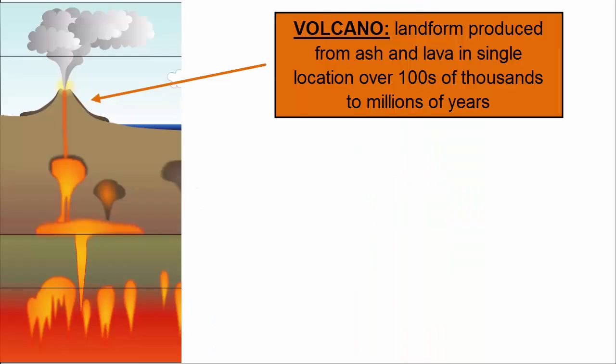A volcano is the landform created through the piling up of lava flows and ash deposits when volcanism happens in a single location over a long period of time, hundreds of thousands to millions of years. We will discuss the various types of volcanoes and other volcanic landforms later in this video tutorial.